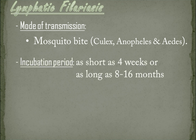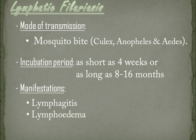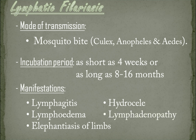Incubation period — as short as 4 weeks or as long as 8 to 16 months. Manifestations: lymphangitis, or acute inflammation of lymphatic vessels; lymphoedema, or tissue swelling; elephantiasis of limbs; hydrocele, or scrotal swelling; and lymphadenopathy, or chronic lymph node swelling.